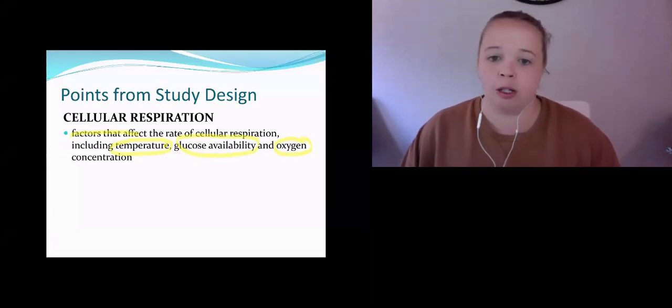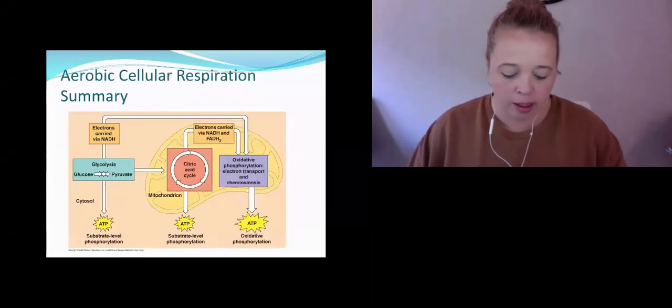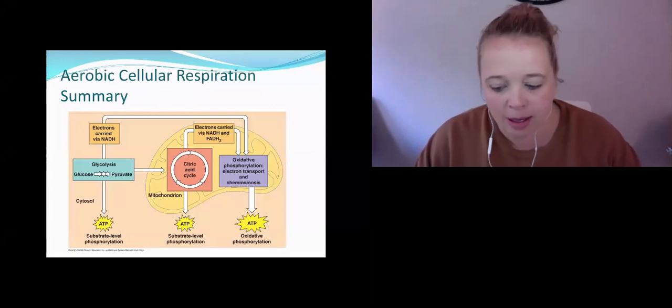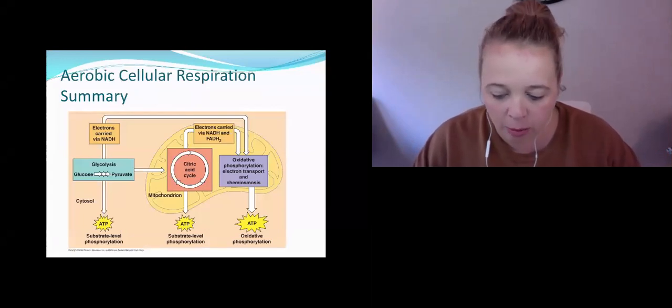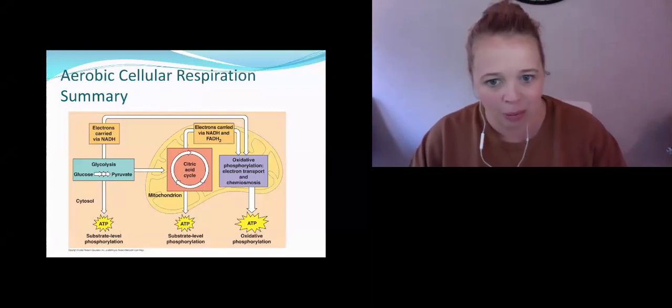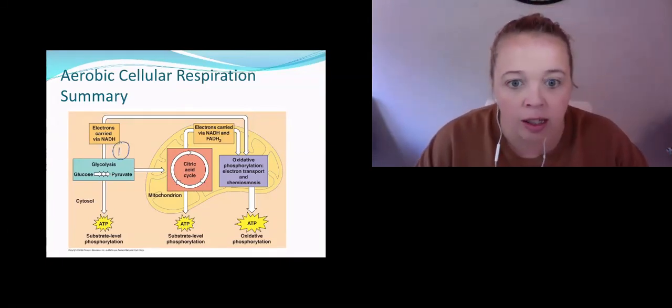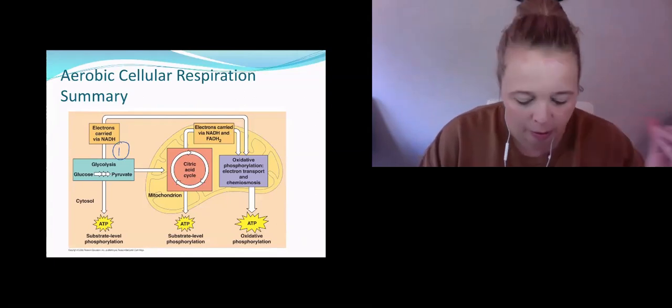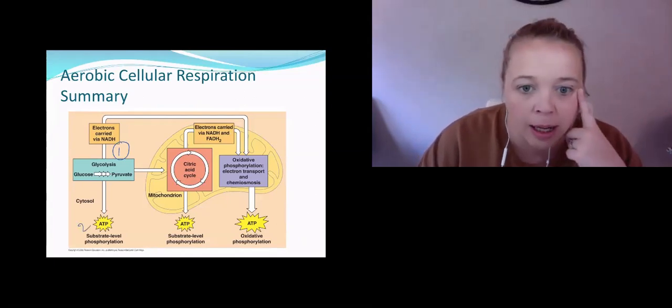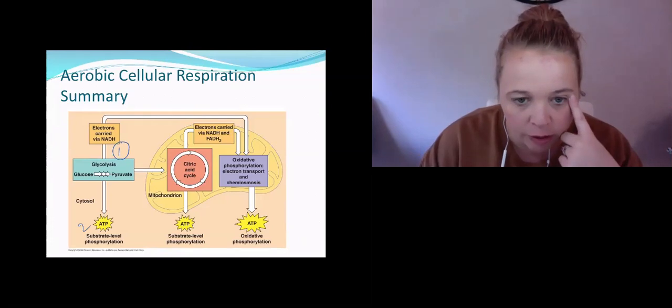Luckily we've already done most of these before. So just a really quick summary of what happens in aerobic cellular respiration and where things are happening. Glycolysis is stage one. That's over here where glucose is turned into pyruvate and we get two ATP out of that. So that's our first stage.